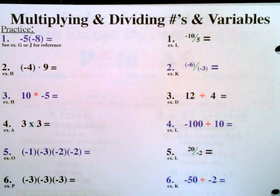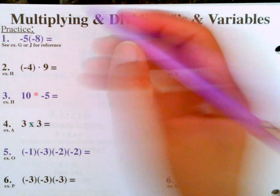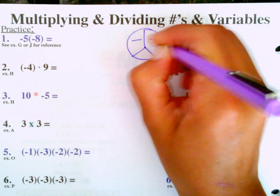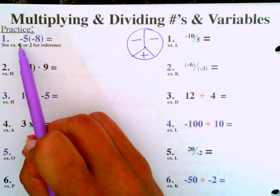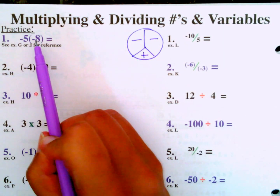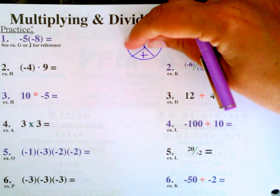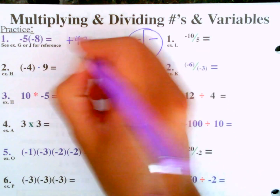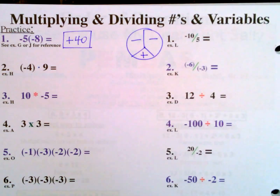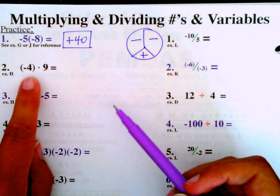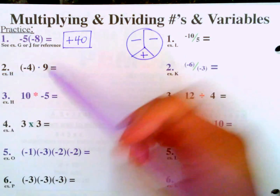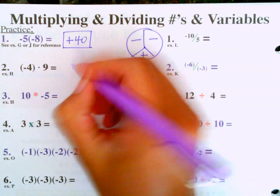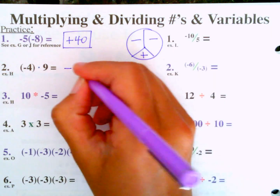Now let's look at some practice problems — multiplying and dividing numbers and variables. Negative 5 times negative 8: negative times negative is positive, so that's positive 40. Negative 4 times positive 9: negative times positive is negative, and 4 times 9 is 36, so negative 36. Positive 10 times negative 5: positive times negative is negative, and 10 times 5 is 50, so negative 50.